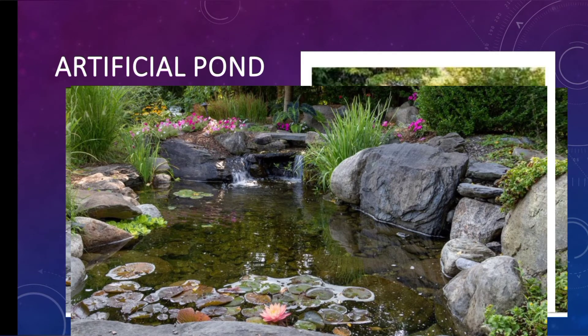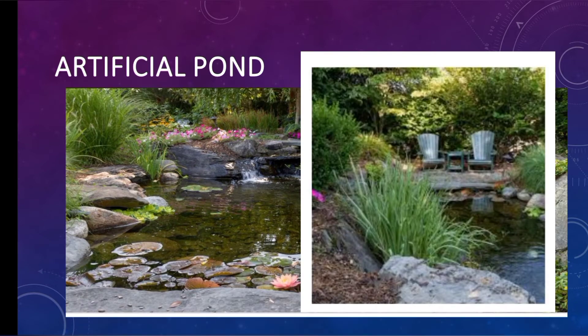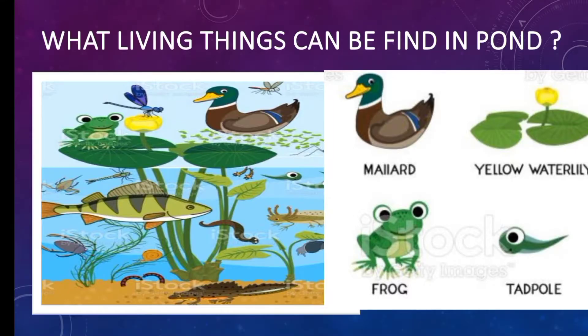An artificial pond, or a garden pond, is a water feature constructed in a garden or designed landscape, normally for aesthetic purposes, to provide wildlife habitat, or for swimming. Living things can be found in a pond.